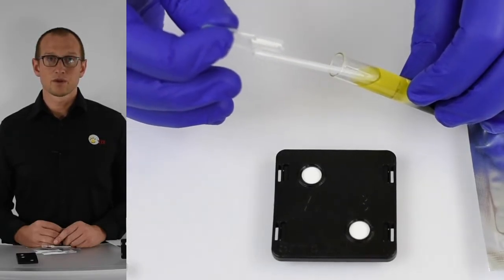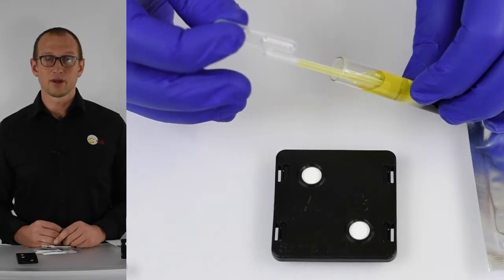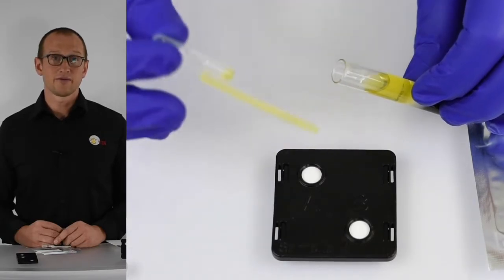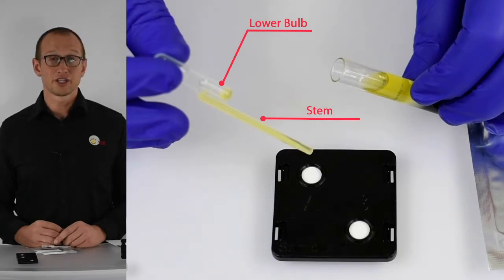Using the fixed volume pipette, squeeze the top bulb and insert into the blood tube. Release the bulb until serum fills the stem and serum enters into the lower bulb.